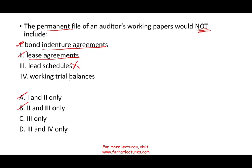Both options three and four — lead schedules and working paper trial balances — will not be part of the permanent file. The answer is D. Be careful on the exam: the question asks what would NOT be included. If you miss that word and answer what IS included, you'd choose A instead of D and lose points unnecessarily.